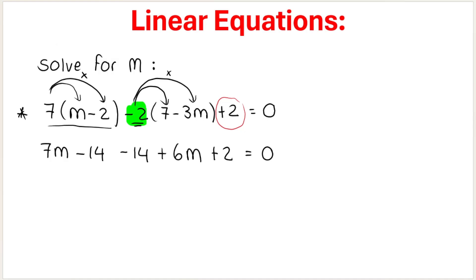Now again, you can see that my m's, my variable here, has exponents of 1, which means it's a linear equation. I'm only going to have one solution. I'm going to keep my m's on this side of the equation, so 7m is going to stay here, positive 7, and positive 6m is going to stay here.